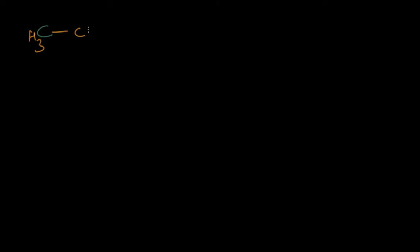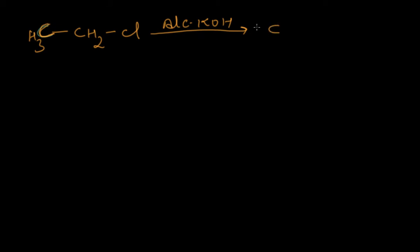To understand this again: CH3CH2Cl, if we react it with alcoholic KOH, the beta carbon is where the hydrogen will be replaced, and we get CH2=CH2, an alkene. This happens because alcoholic KOH is a solvent of low polarity, and it leads to elimination.